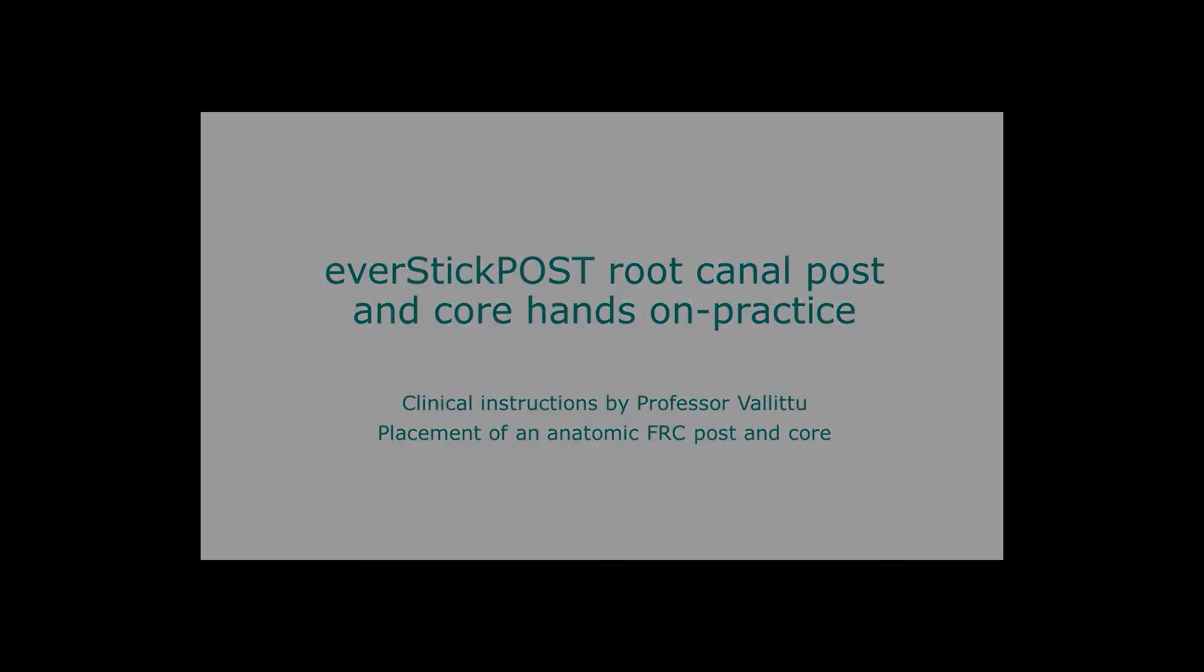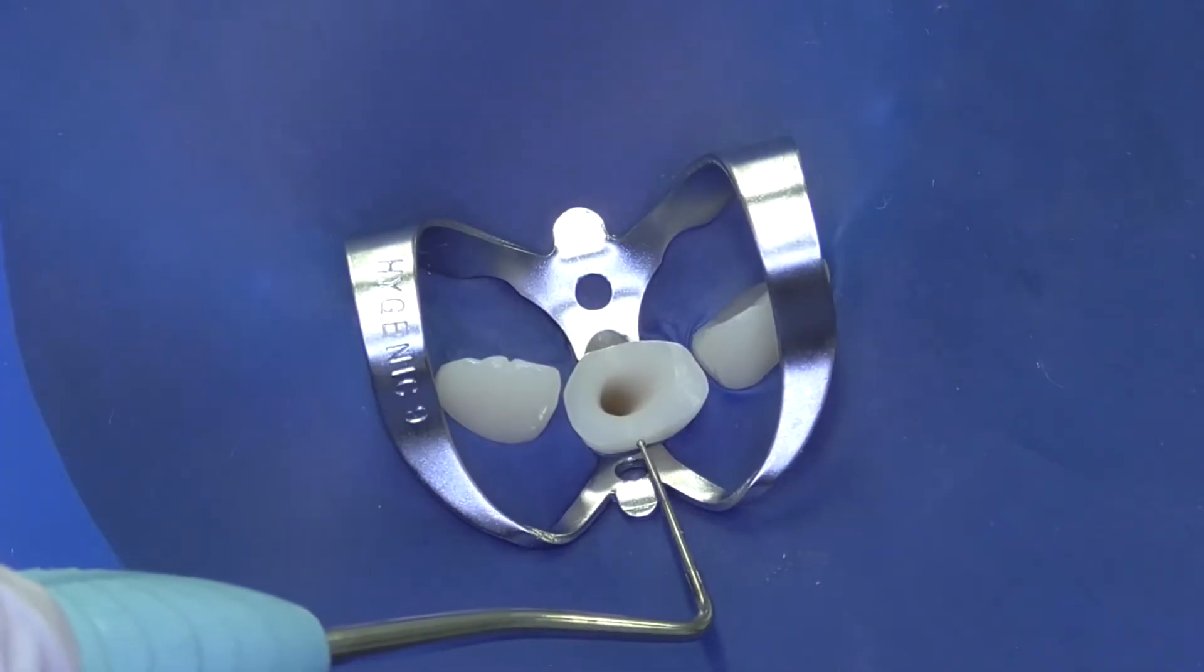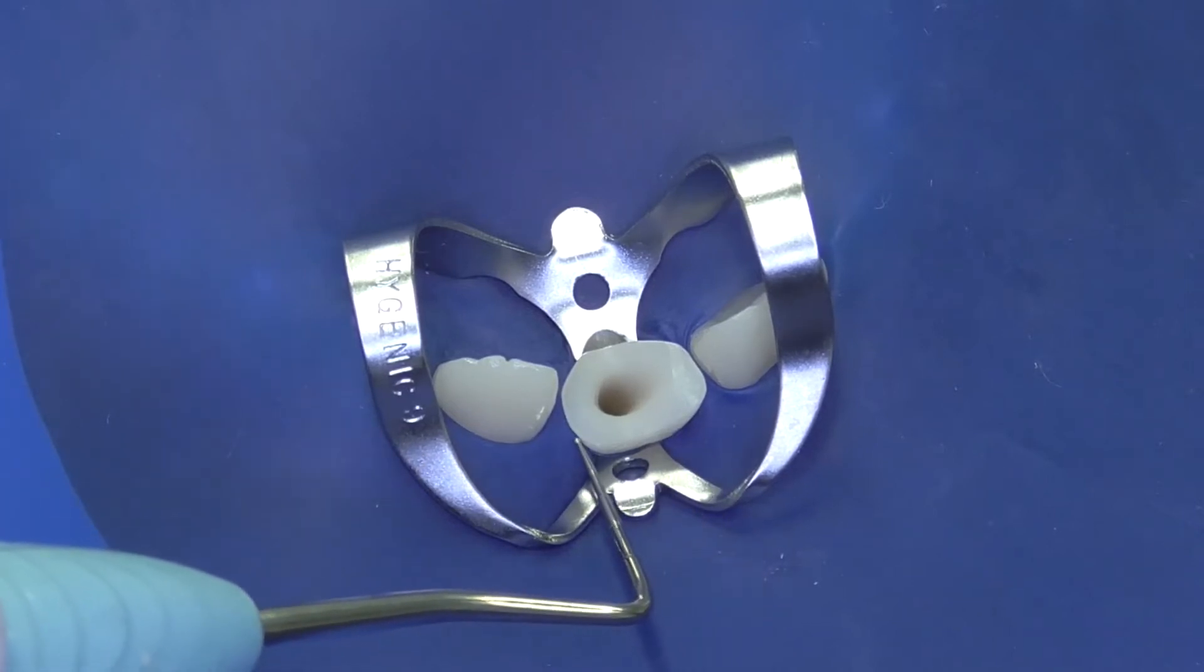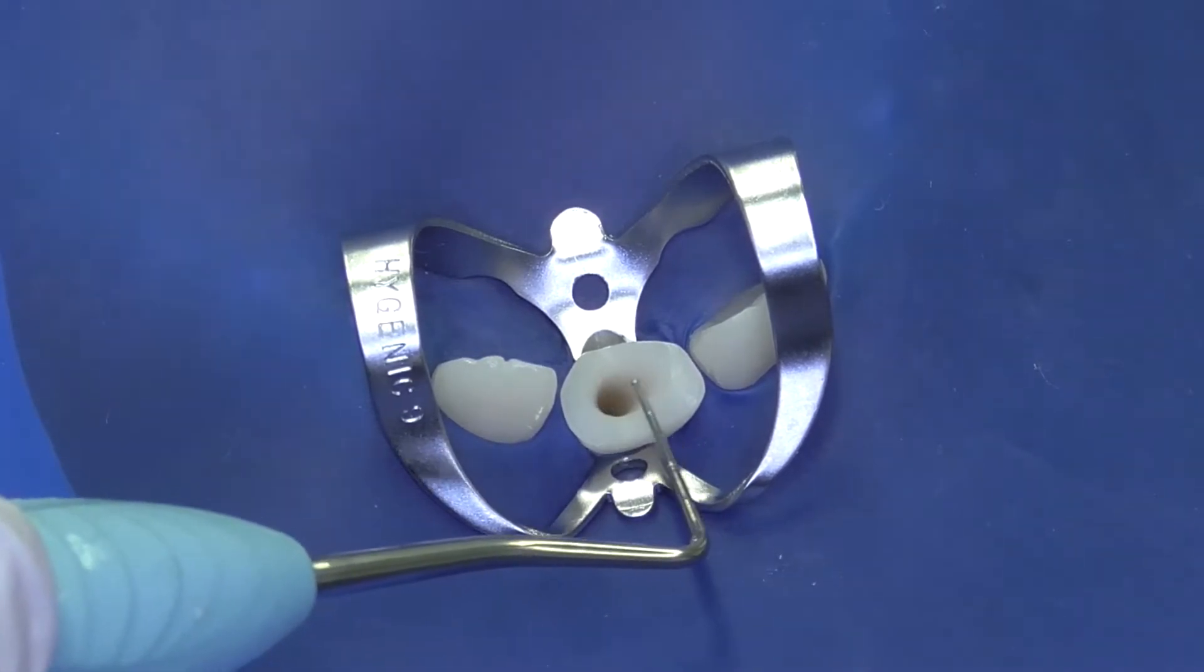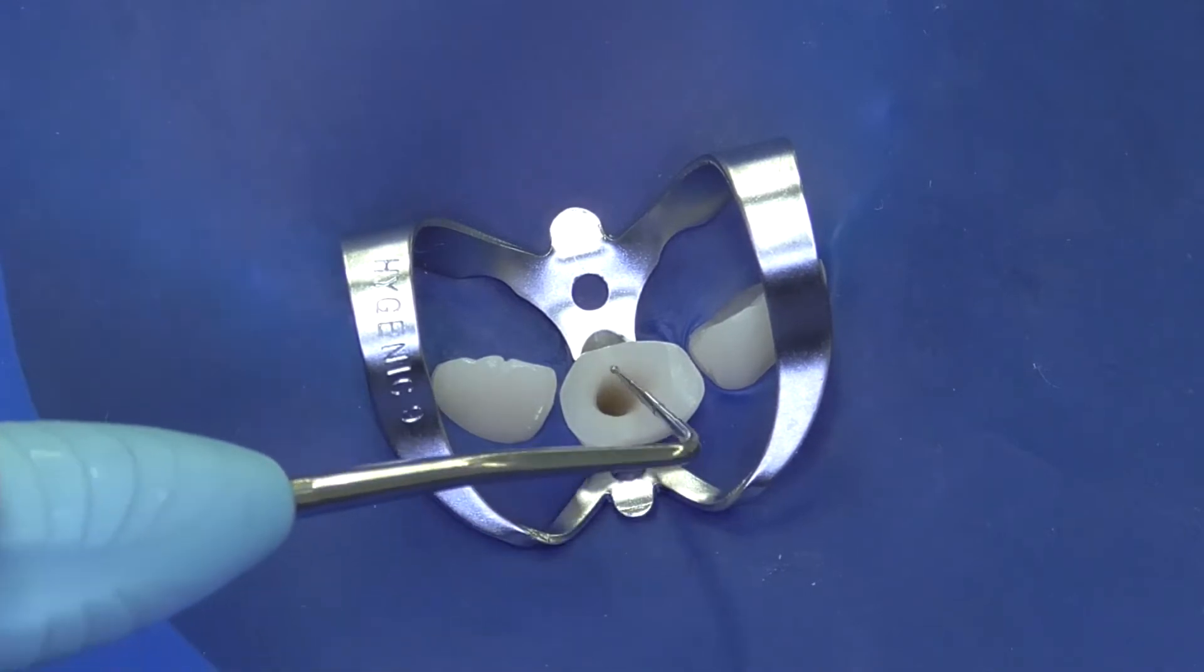In this video demonstration, we are preparing a custom-made individual fiber post in the case where we do not have a chance to make a metal ferrule of a metal-ceramic crown. Instead of a ferrule, we are using the space we have in the coronal opening of the root canal, which will be fully filled with fibers.